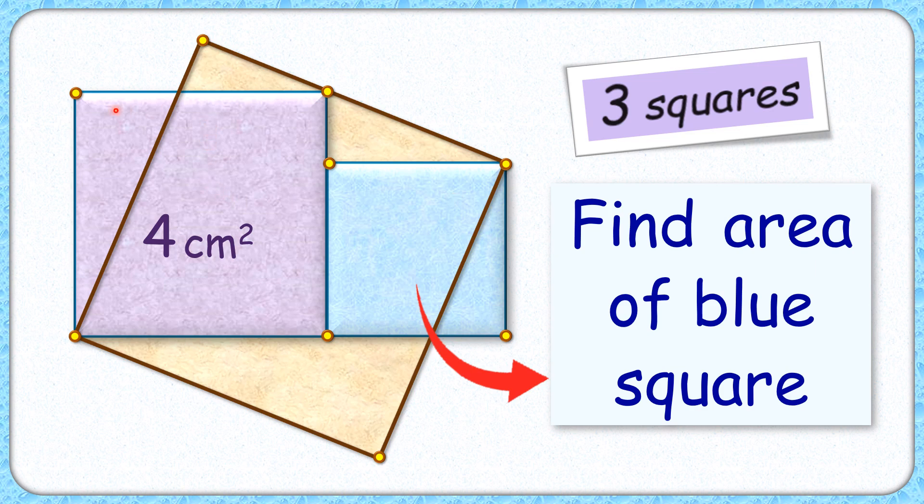The alignment is such that one vertex of the purple square lies on the side of the brown square. With this given data, we have to find the area of this blue square.